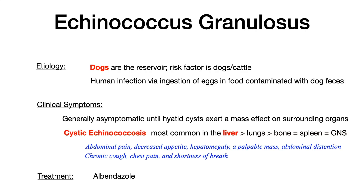Let's talk about Echinococcus granulosus to conclude. The reservoir is dogs, and risk factors include areas with dogs or cattle — such as dogs used to herd or protect cattle. Human infection occurs when humans ingest eggs in food contaminated with dog feces, so being on farms or around herding dogs is a risk factor. Echinococcus granulosus is generally asymptomatic at first, but causes slowly growing hydatid cysts that exert mass effect on surrounding organs including the liver, lungs, spleen, CNS, and bones.